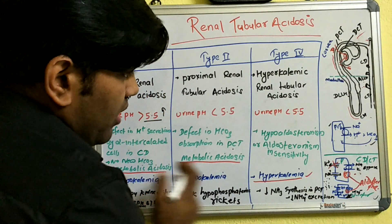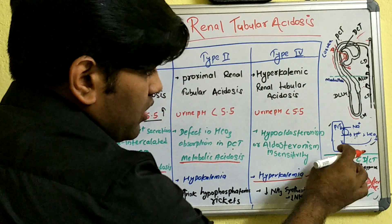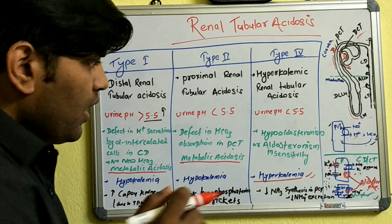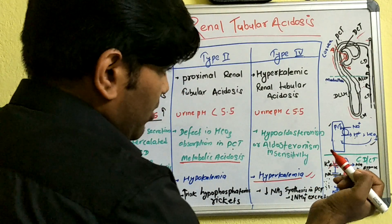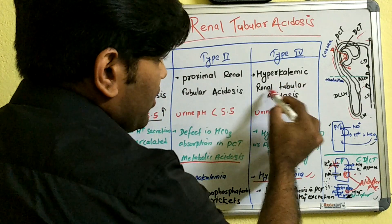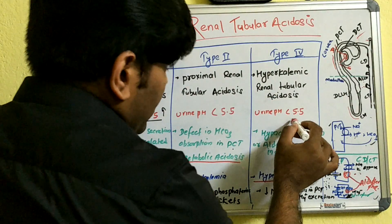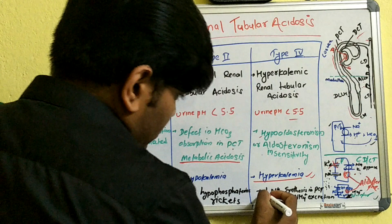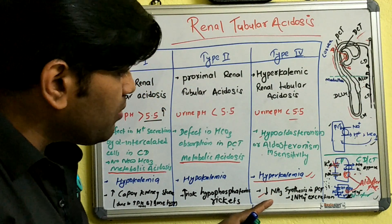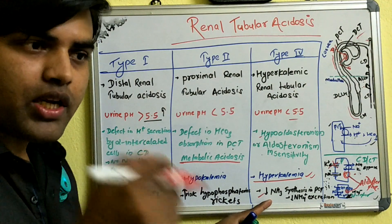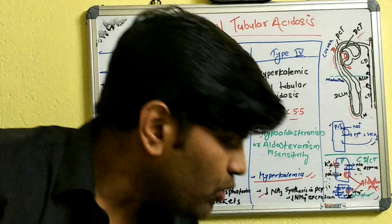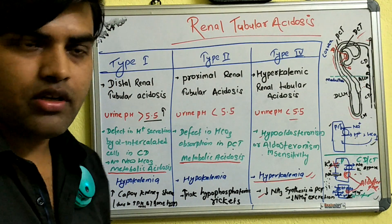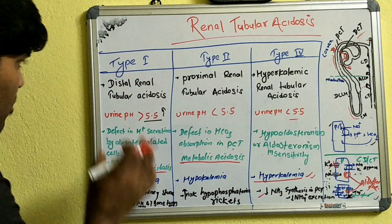So in Type 4 RTA, hyperkalemia is maintained. This is in contrast to Types 1 and 2, which have hypokalemia. In Type 4, since aldosterone is not working and potassium is not secreted, hyperkalemia persists. Urine pH will be less than 5.5. The underlying cause is hypoaldosteronism or aldosterone receptor insensitivity. There is also decreased ammonia synthesis in the proximal convoluted tubule in this syndrome, which decreases H+ excretion and contributes to the development of acidosis.